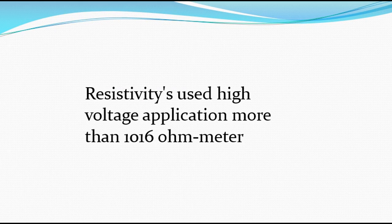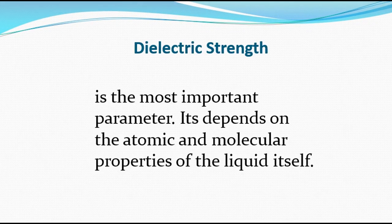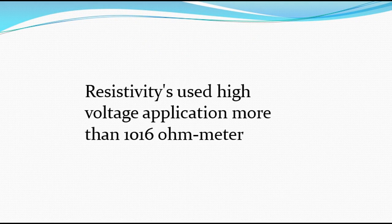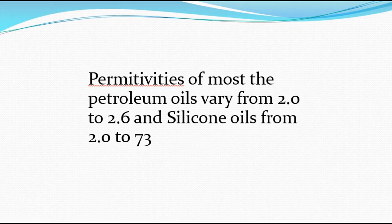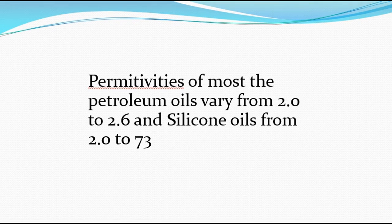Resistivity, for high voltage applications, is more than 10 raised to power 16 ohms meter. In terms of permittivity: most petroleum oil ranges from 2.0 to 2.6, while silicon oil ranges from 2.0 to 73. When I discussed silicon oil previously, I showed you the image of it and explained how it works and functions.